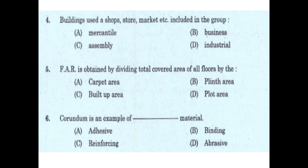Next question: buildings used as a shop, store, market, etc. are included in which group? Options are: merchandise, business, assembly, industry. The answer is merchandise.